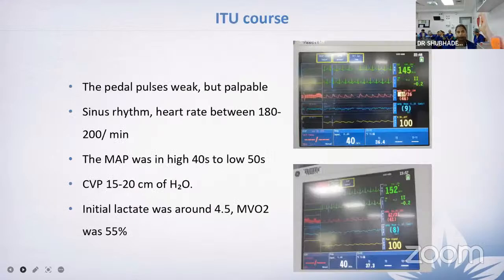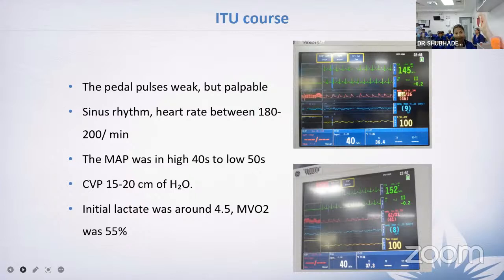During the ITU course, pedal pulses were palpable and the baby had sinus rhythm with heart rate 180 to 200 per minute. Mean pressures were in the high forties to low fifties, CVP ranging 15 to 20. Initial lactate was around 4.5 and mixed venous saturation was 55%. Over the next four hours, the patient continued to have borderline hemodynamics, persistent tachycardia, and dropping urine output.